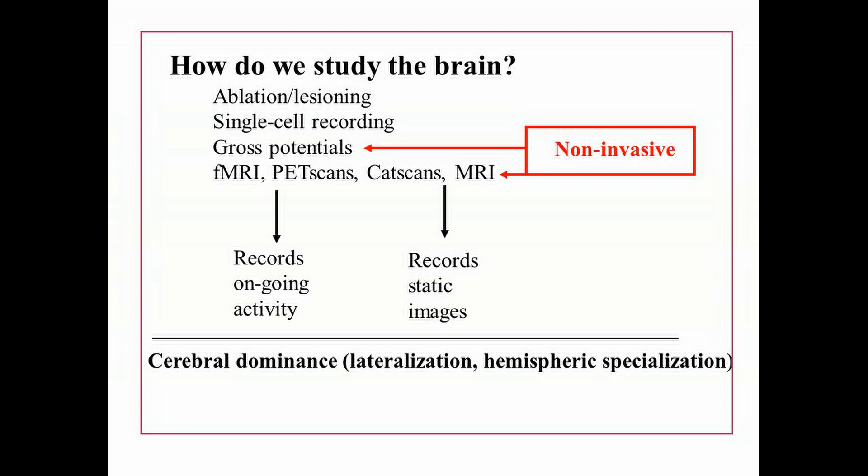We have gotten well past the necessity to just wait for natural accidents to occur that cause brain damage, then wait for someone to die of natural causes, and then perform autopsies to determine the specific sites of brain damage and relate that to behavioral changes. You do need to know that there are many different techniques for studying the brain — some are invasive, some record ongoing activity, while others record static images, and they're all very useful.